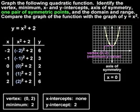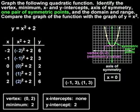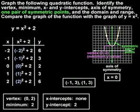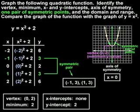Next, we're asked to find one pair of symmetric points. We can see from the graph that the points shown in green represent a symmetric pair in relation to the y-axis, or the axis of symmetry, and these points have the coordinates negative 1, 3 and 1, 3. Another way of finding a symmetric pair is to use the ordered pairs in the table. Remember that the y-values of symmetric pairs of points are the same. Therefore, the points negative 1, 3 and 1, 3 are a symmetric pair because they each have a y-value of 3. So whether we use the graph or the table, one pair of symmetric points is negative 1, 3 and 1, 3.